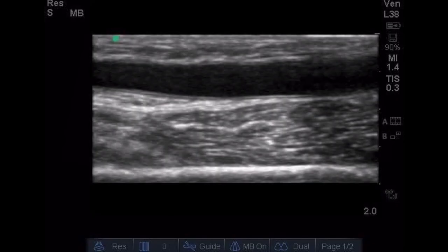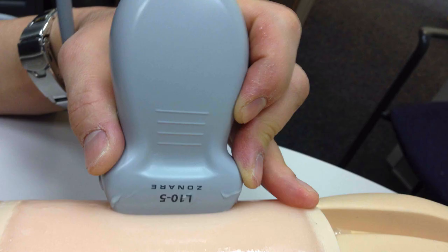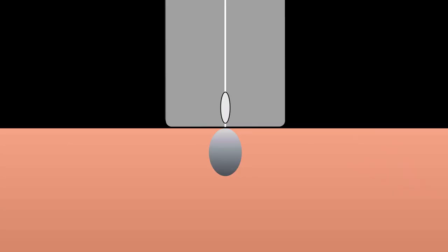What you want to visualize in the sagittal plane is a long vessel extending across your field of view with bright walls — that means you're in the center of the vessel with an excellent view for cannulation. Use a very low grip on the linear array probe, more like a pencil than a knife, for fine motor control. Extend a finger to stabilize the probe against the patient and prevent sliding. Note the seam in the middle of the probe casing — this helps you align your needle with the ultrasound beam.